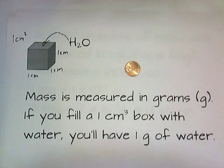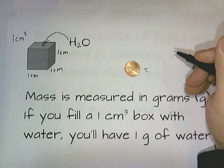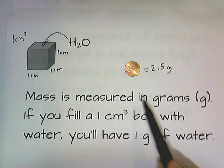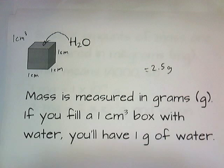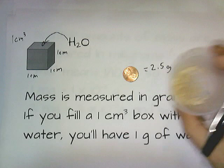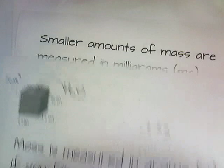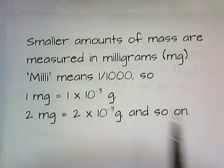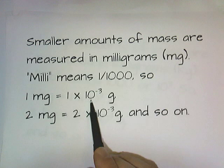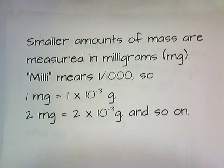A penny is about 2.5 grams, and that'll give you an idea of how heavy a gram is. To measure tiny quantities of mass, we use something called the milligram. Milli means one one-thousandth, so one milligram is one one-thousandth of a gram, or one times ten to the negative three grams. Two milligrams is two-thousandths of a gram, or two times ten to the negative three grams.